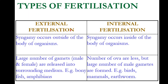Types of fertilization: external fertilization and internal fertilization. When syngamy (fusion of gametes) occurs outside the body of the organism, generally in water, it is called external fertilization. Large numbers of male and female gametes are released into the surrounding medium. Examples are bony fish and amphibians like frogs — male and female frogs release gametes and fusion takes place in water.